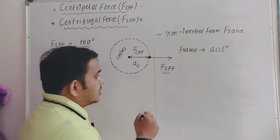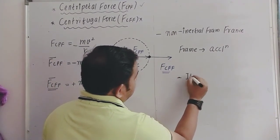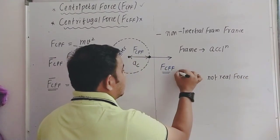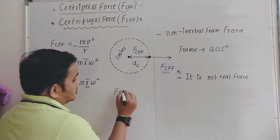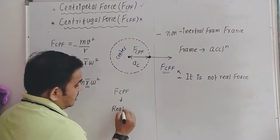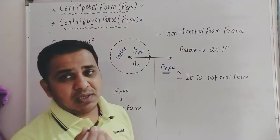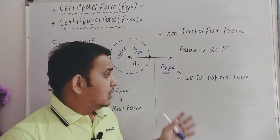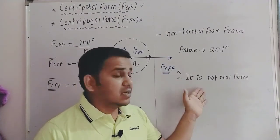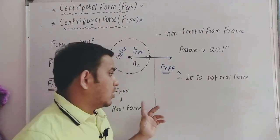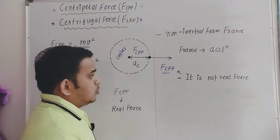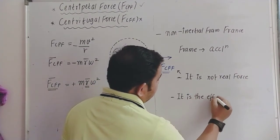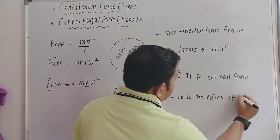This centrifugal force is not a real force — it is a pseudo force. Centripetal force, however, is a real force. Real forces arise due to physical interaction. Centrifugal force is just the effect of circular motion observed from a non-inertial frame.